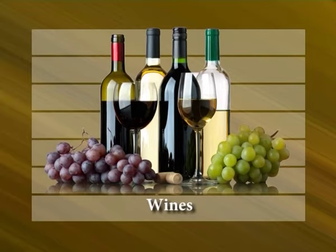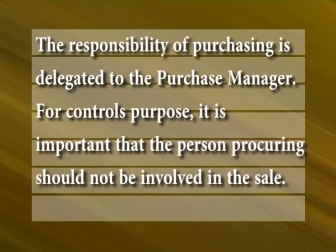Broadly, the types of alcoholic beverages purchased in any beverage outlet are wines, spirits, and beers. The purpose of beverage purchasing controls is to ensure that an appropriate supply of ingredients for producing beverage products for sales is maintained at hand. The responsibility of purchasing is delegated to the purchase manager. For control purposes, it is important that the person procuring should not be involved in the sale.